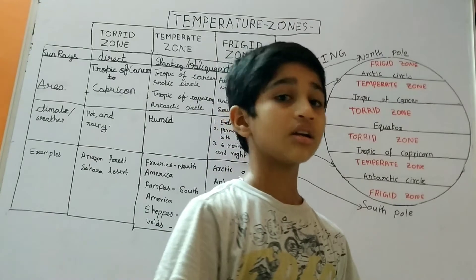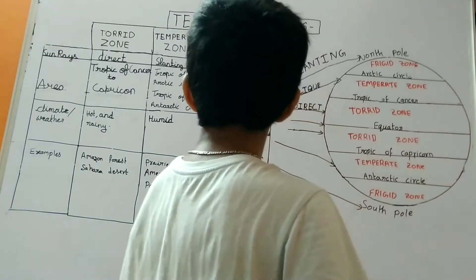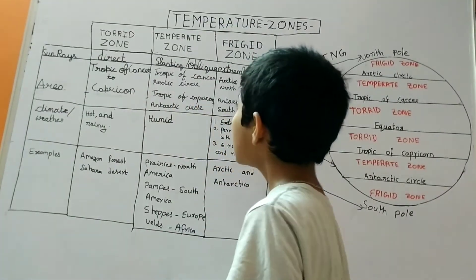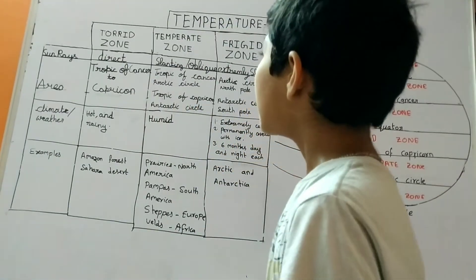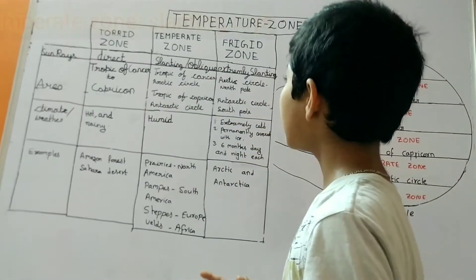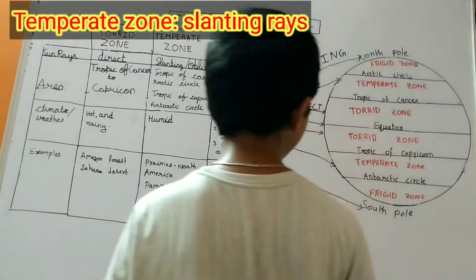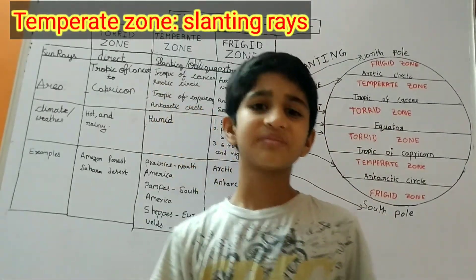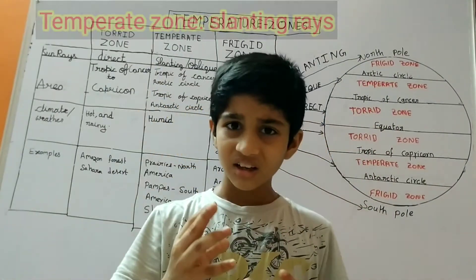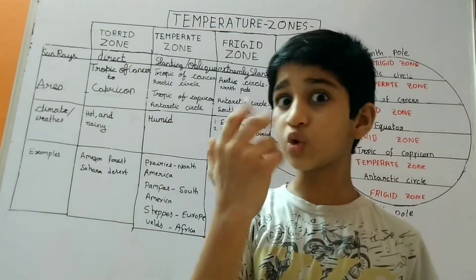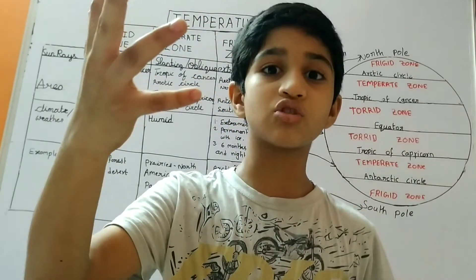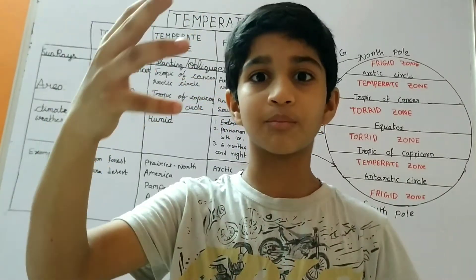Now let us move to the temperate zone. Here the sunrays are slanting or oblique, and it is divided into two groups: the north temperate zone and the southern temperate zone.